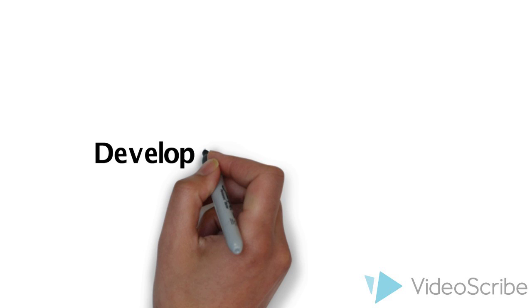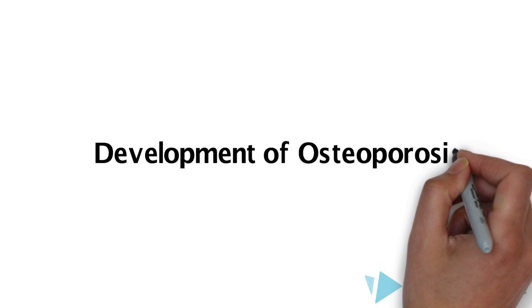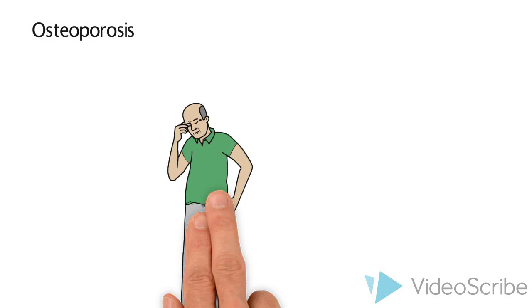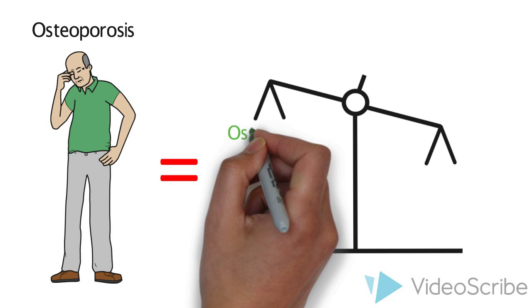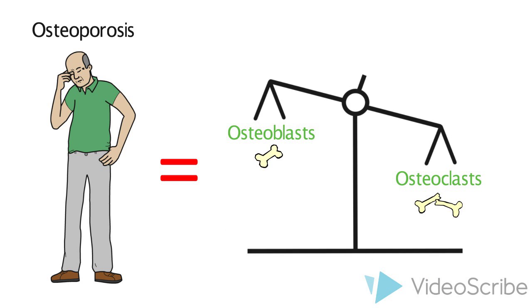Now let's move on to talk about how osteoporosis develops. For individuals with osteoporosis, osteoblast activity decreases while osteoclast activity remains the same.